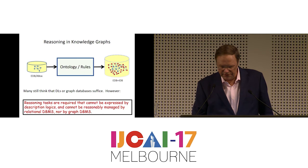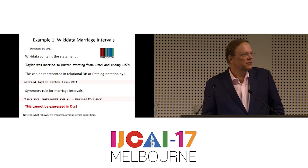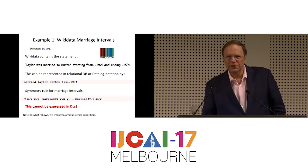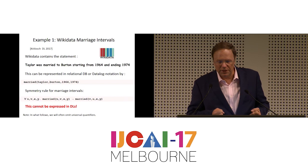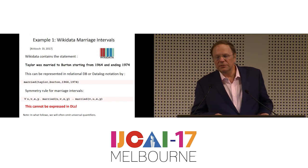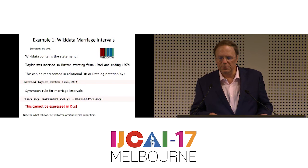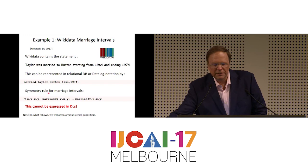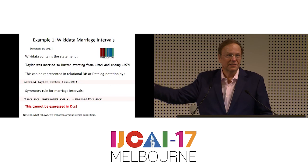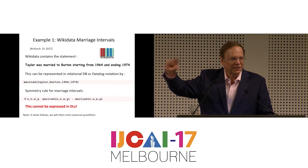Here are some examples. The first was copied from a recent paper by Markus Krötzsch at the DL workshop. Krötzsch is one of the main people involved in Wikidata. They say they need rules. For instance, if you have in Wikidata: Taylor was married to Burton starting from 1964, ending 1974 — this could be represented in a relational database as a four-tuple. Then you could have a symmetry rule: if Taylor was married to Burton in this interval, then certainly Burton was married to Taylor in this interval. This is a simple symmetry rule that gives you exactly the same number of facts as in your original database.